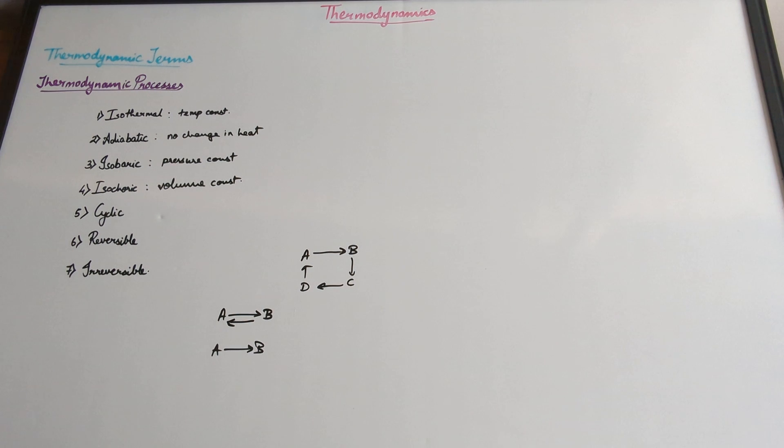Cyclic is when there are multiple set of processes taking place and then ultimately you get back the system in the initial stage.